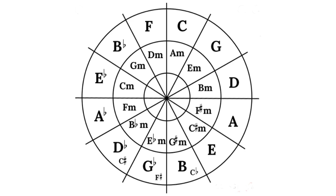So F is a fifth below C, then B flat is a fifth below F and so on.